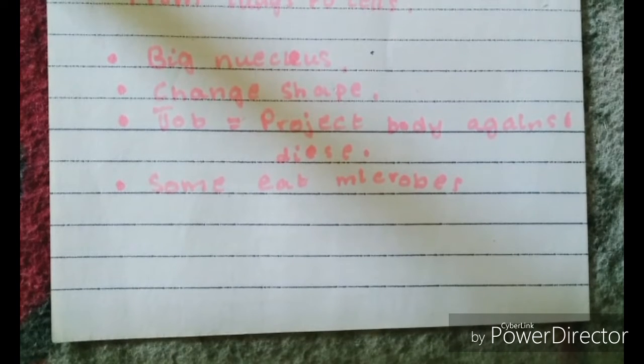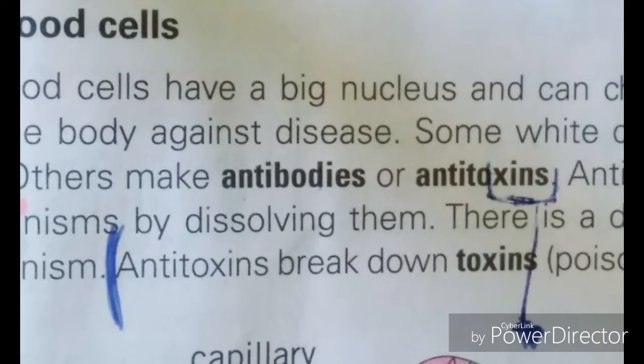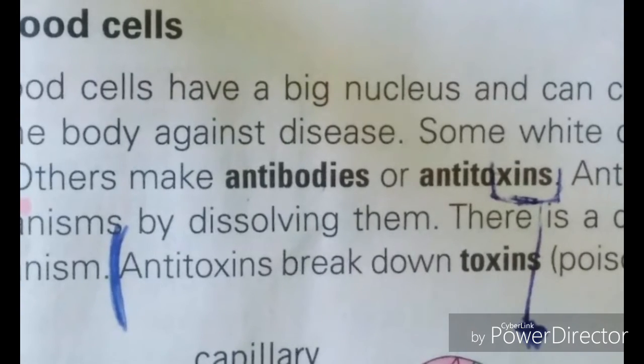Others make antibodies or antitoxins. Antibodies are chemicals that destroy organisms by dissolving them. Antitoxins break down toxins or poisons that microorganisms produce.